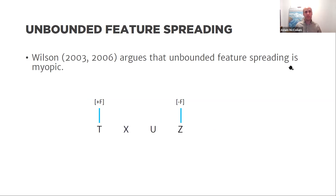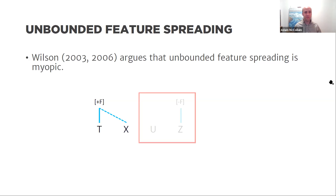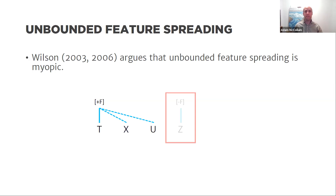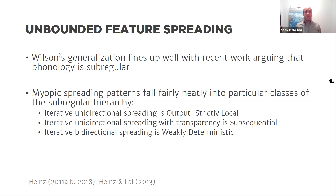Schematically, with autosegmental relations, if feature F is spreading from T to X and then to U, the features present in Z should have absolutely no effect. When T spreads to X, U and Z are invisible. When T spreads to U, everything in Z — F and other features — is invisible and irrelevant. Wilson's generalization lines up quite nicely with recent work in computational phonology: the claim that phonology is subregular is intimately tied to myopia and unbounded spreading.